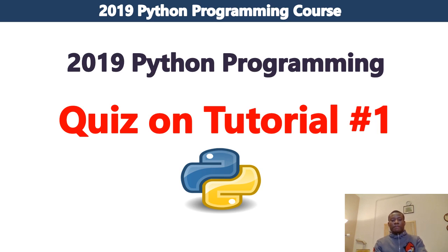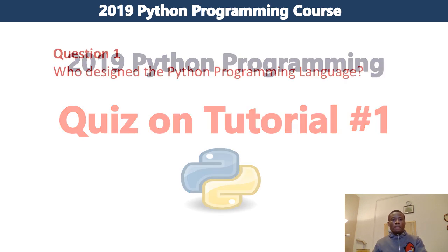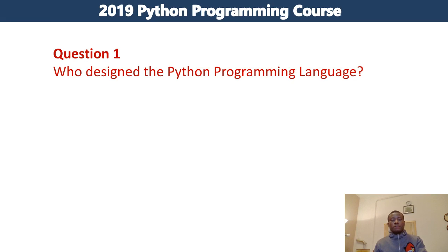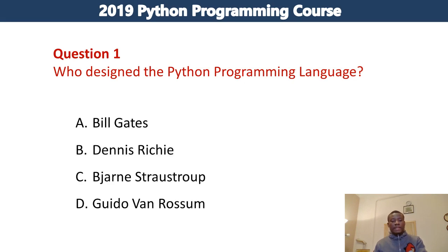Let's take the first one. Who designed the Python programming language? The options are: Bill Gates, Dennis Ritchie, Jan Strauss-Straub, or Guido van Rossum. Guido van Rossum designed the Python programming language in the early 90s.